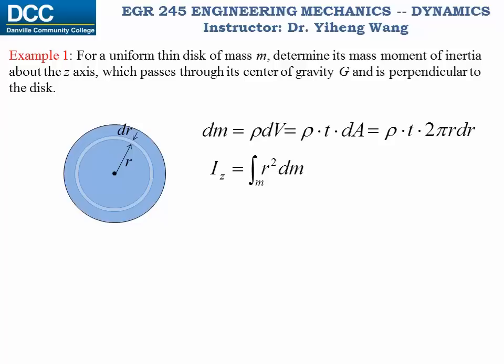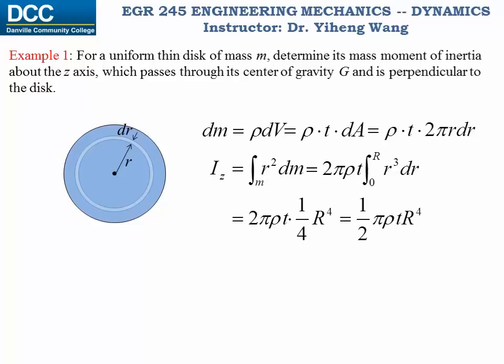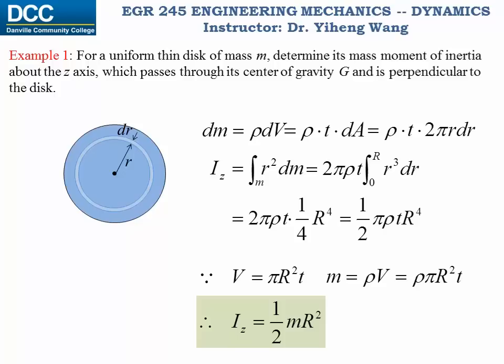Substituting dm and integrating from r = 0 at the center to r = R at the edge, we get an expression. For the entire disk, its volume equals π·R²·t, and its mass equals rho·π·R²·t. Substituting this into the mass moment of inertia expression, we find that the mass moment of inertia equals one-half m·R², where R is the radius of the disk. This is a very useful conclusion that can be used directly later on.